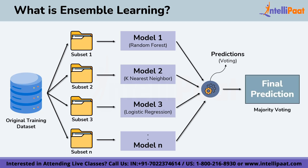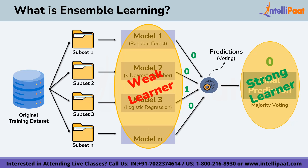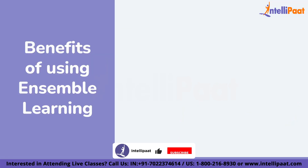Once all models are trained, each model gives some output, and voting or majority predictions are done to get the final prediction. For example, if model 1 gives output 0, model 2 gives output 0, model 3 gives output 1, and model N gives output 0, then the majority vote is 0, so the final ensemble prediction is 0. All individual models are known as weak learners, and the combined ensemble model is known as the strong learner.